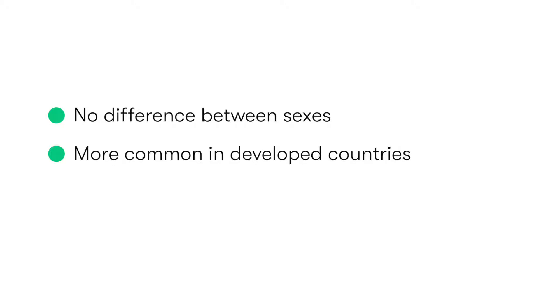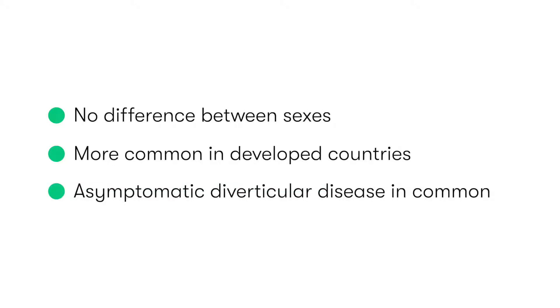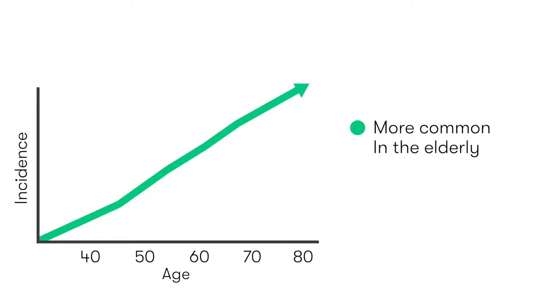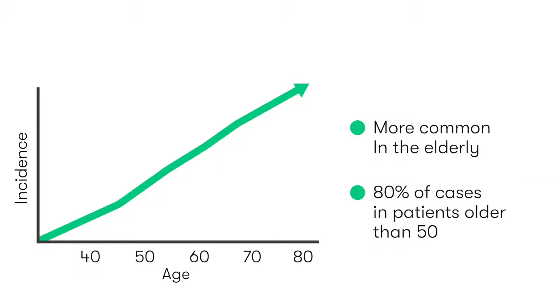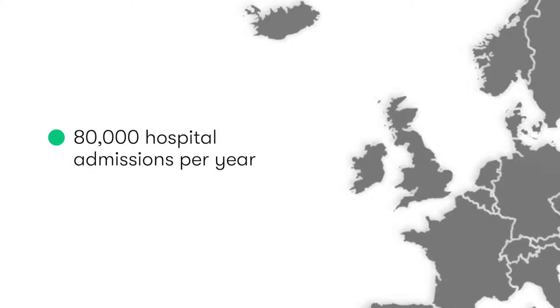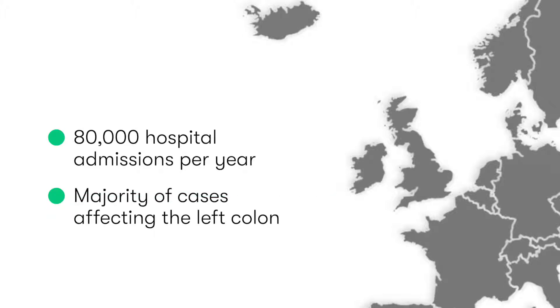Asymptomatic diverticular disease is very common. Diverticular disease and diverticulitis are predominantly conditions which affect the older population, with 80% of cases occurring in patients who are older than 50. In the UK alone, diverticulitis is responsible for almost 80,000 hospital admissions every year, with the vast majority involving diverticulitis.